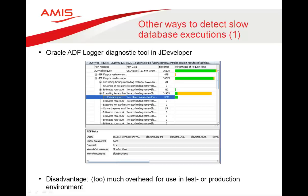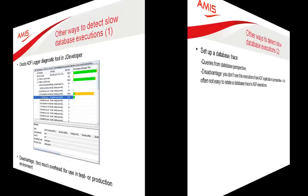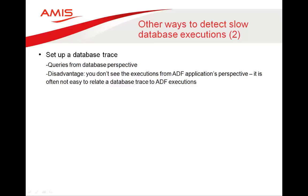There are also other ways to detect slow database executions in ADF. Oracle provides the ADF logger diagnostic tool in JDeveloper, which shows a complete breakdown of an HTTP request and where it spent its time. However, it has too much overhead for use in a test or production environment. Another way is to set up a database trace, so you see all executions from the database perspective — but that is a disadvantage since you don't see it from the ADF application perspective, and a database trace has significant performance overhead.